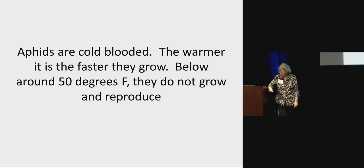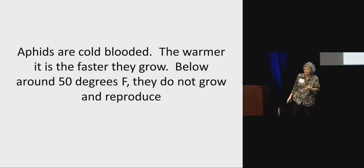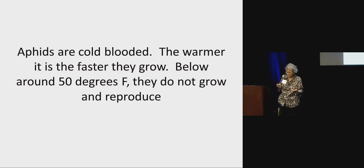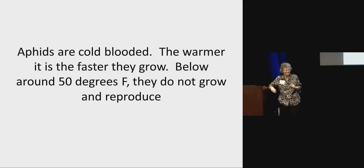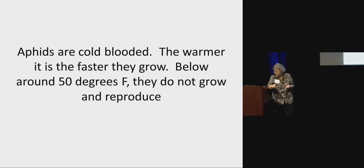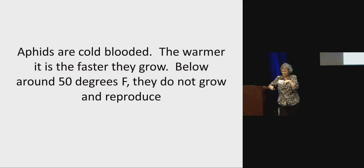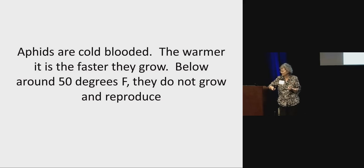Aphids are cold-blooded, so the warmer it is, the faster they're going to grow. If you get down below about 50 degrees, they're not going to be reproducing — they're just going to be sitting there. So for a good portion of the wintertime, the aphids that come in in the fall are going to be more or less the aphids you have later on towards the end of winter. They may have reproduced a little bit. If we get a warm spell, it depends on the climate — a warmer winter in your region means a greater chance of aphid reproduction.